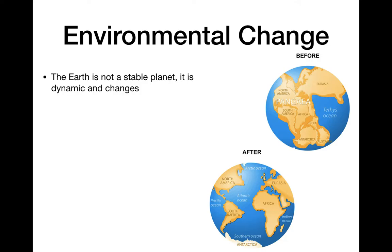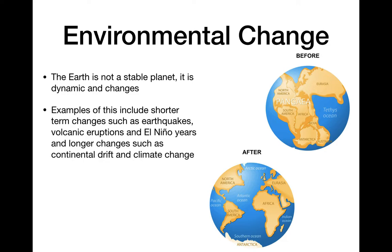The Earth is not stable. We tend to think of it as we see it right now in our lifetime, but remember it's a very old planet and it's been changing a lot over time. Changes can be really short-term things: an earthquake can change the surface of the Earth for decades, a volcanic eruption can affect an area for several decades, and El Niño affects climate for about a year and recurs cyclically every few years.